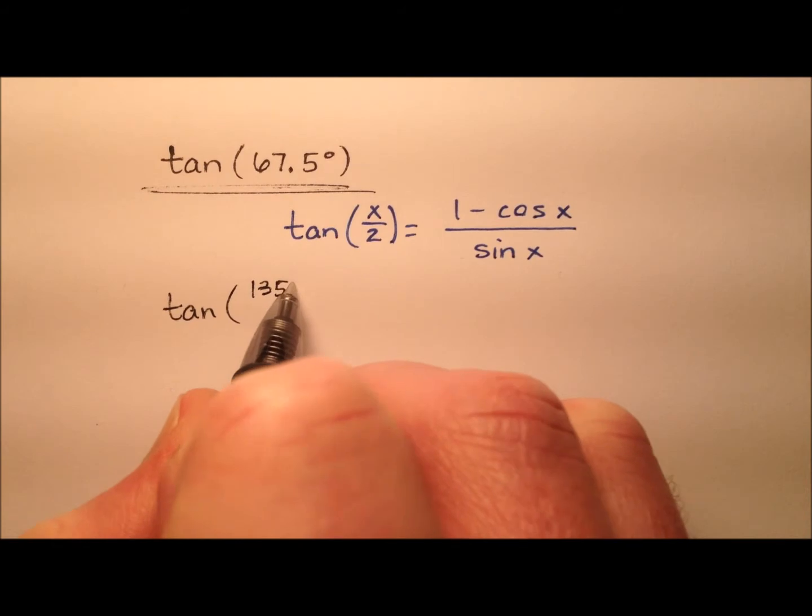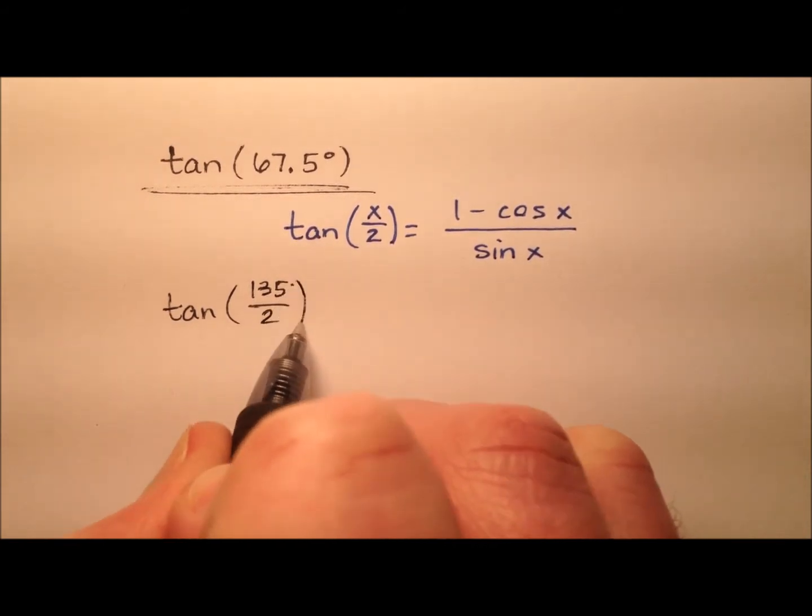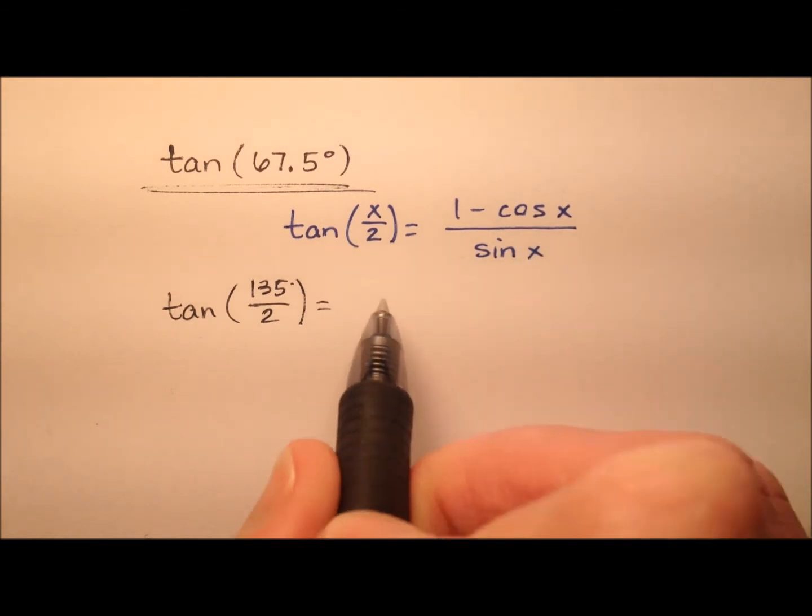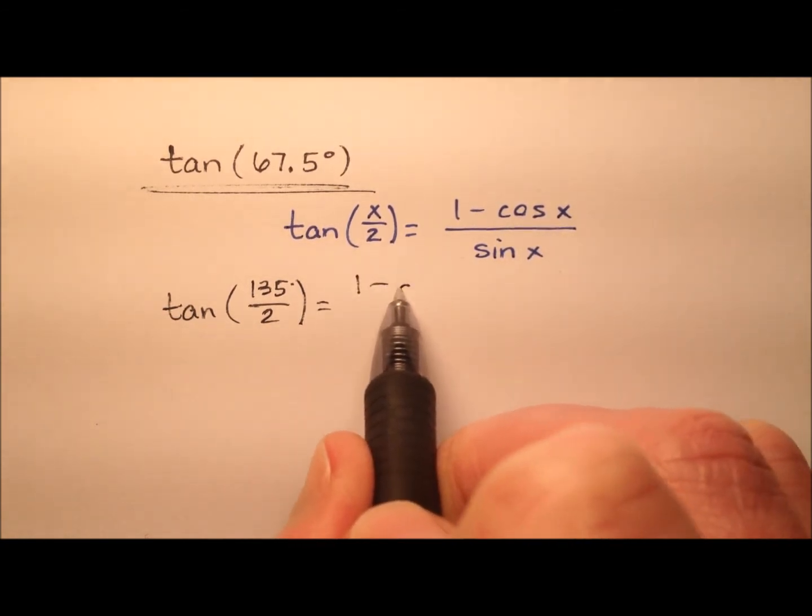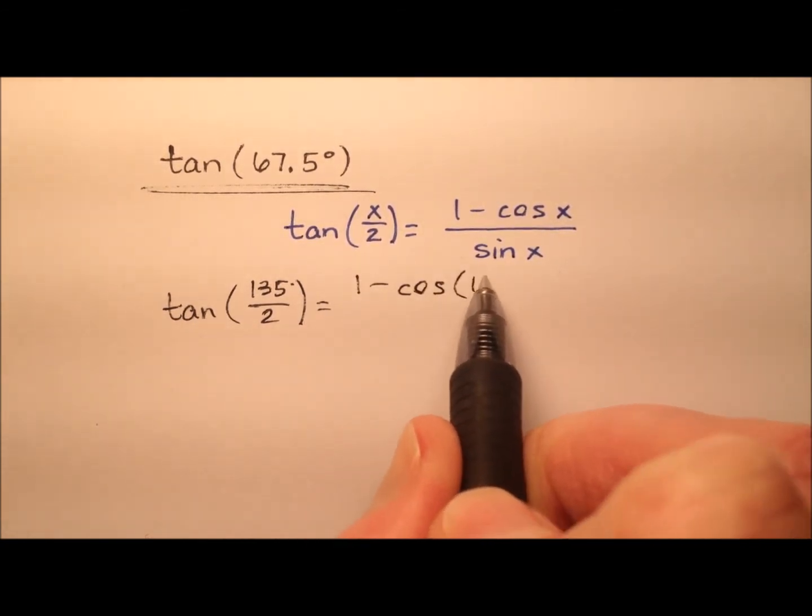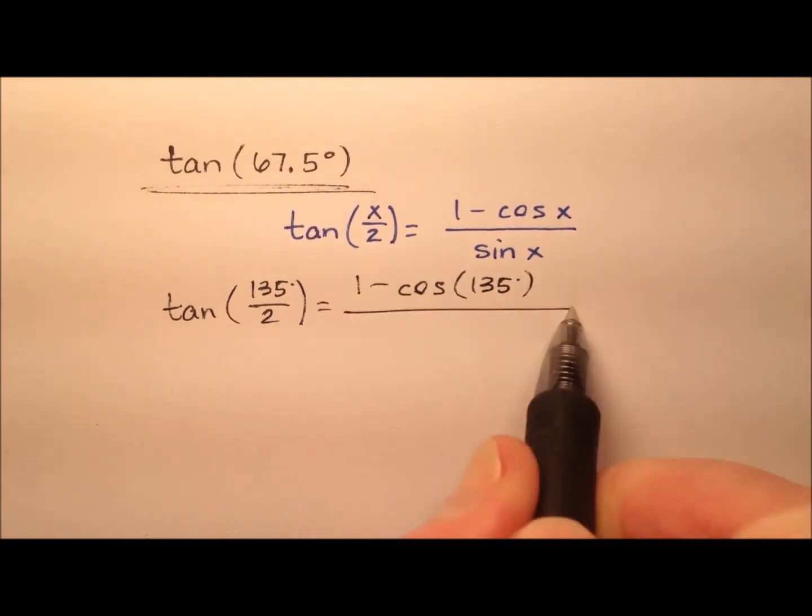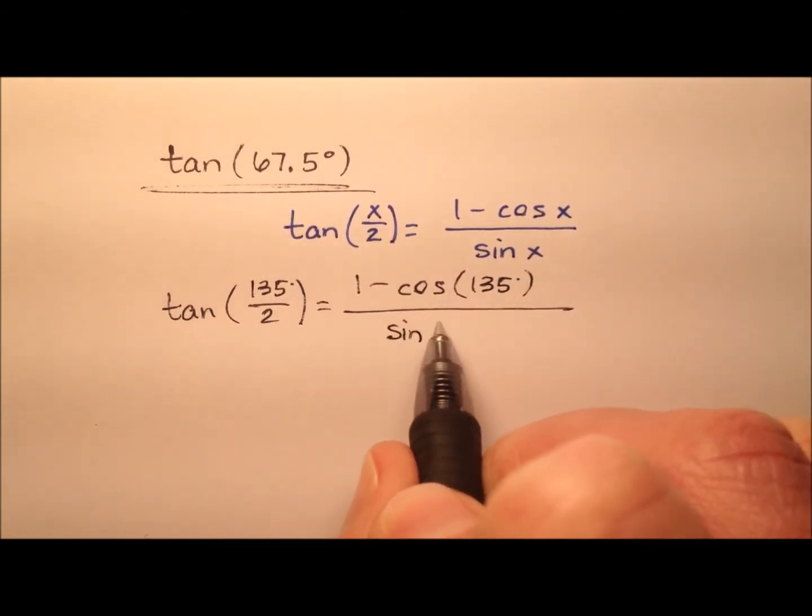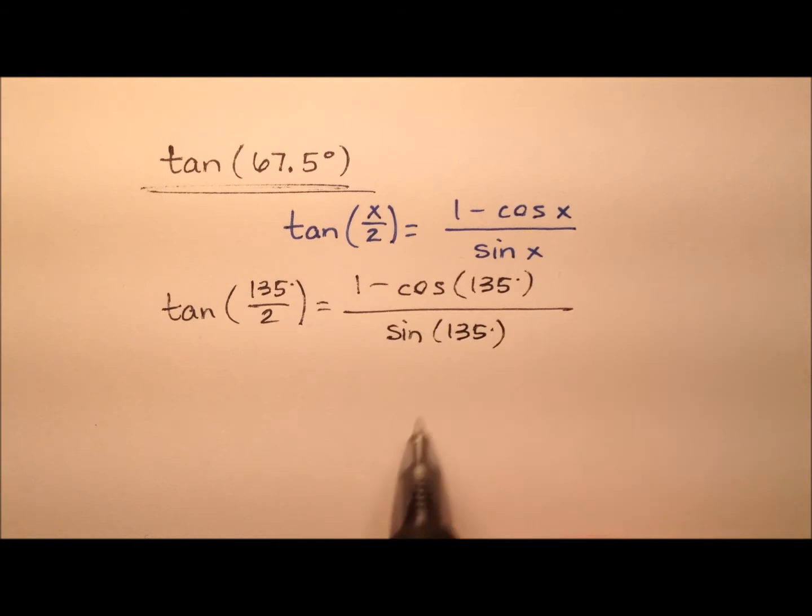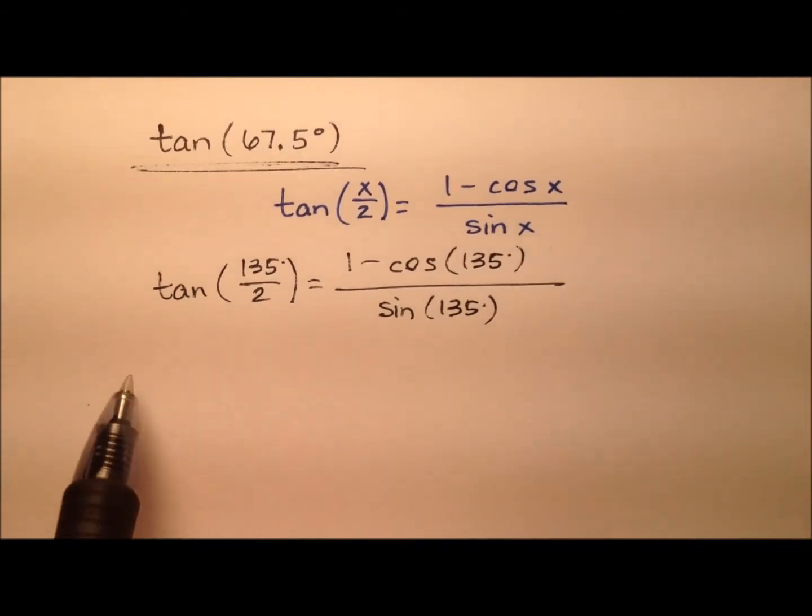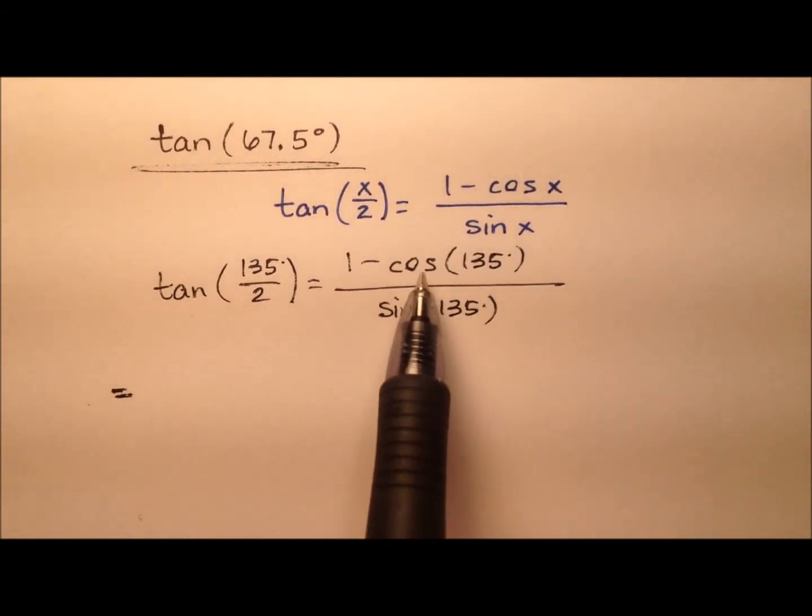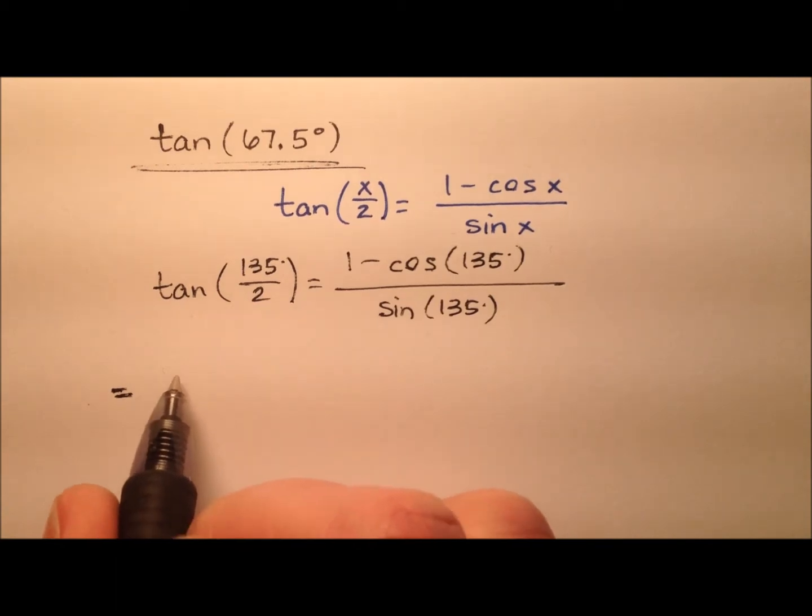So I can say the tangent of 135 degrees over 2, and then we can use this half-angle identity. So it'll be 1 minus the cosine of that 135 degrees, all divided by that sine of 135 degrees. And this is great because we know both of these values. So let's get started.